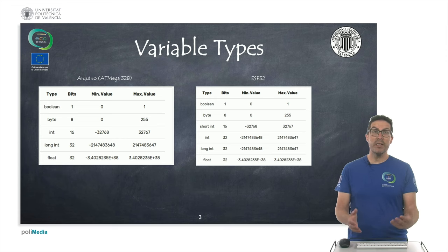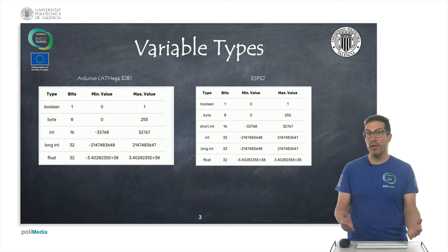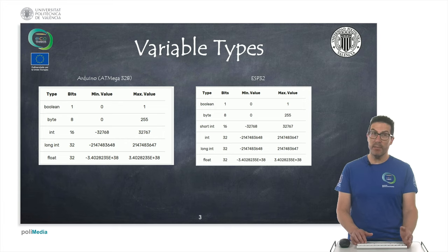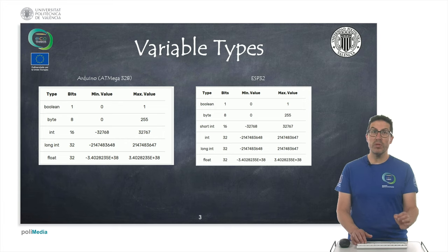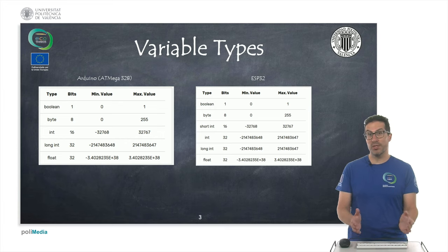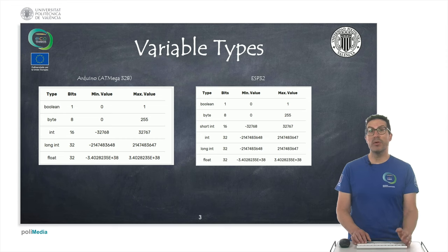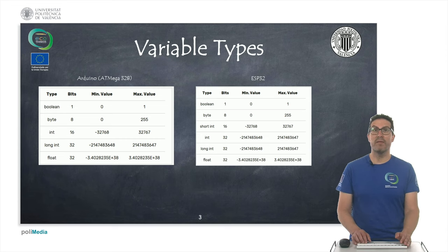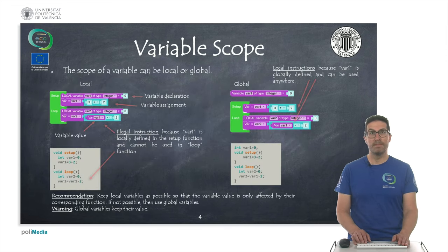We also have long for storing very big integral numbers, and float which stores a real number using 32 bits. Of course there are other variable types but these are the main ones we're going to use.